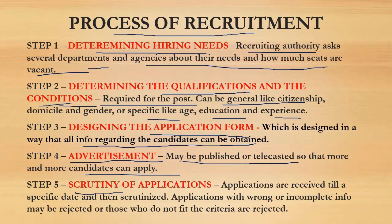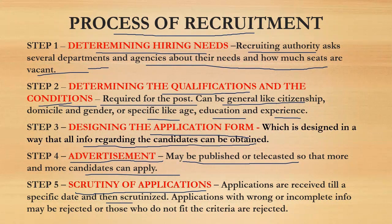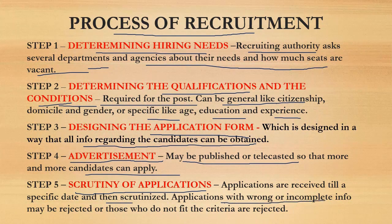Step number five is scrutiny of applications. Is step mein applications ko scrutinize kiya jata hai — unki jaanch-partal ki jati hai. Applications are received till a specific date and then scrutinized. Ek particular last date of submission di jati hai, aur uske baad scrutinization start hoti hai. Applications with wrong or incomplete information may be rejected.